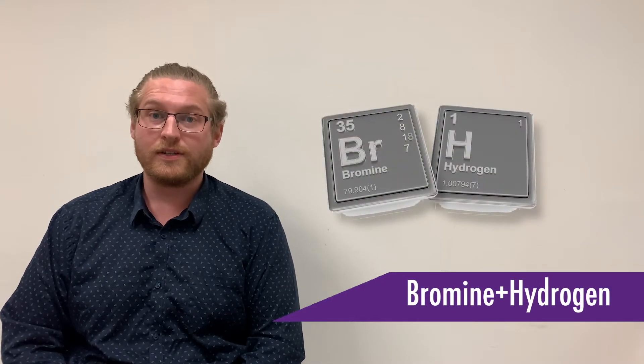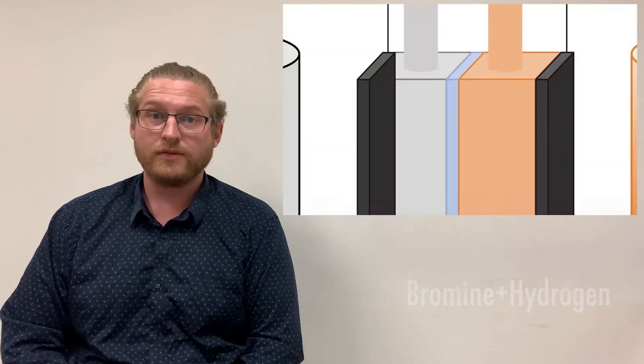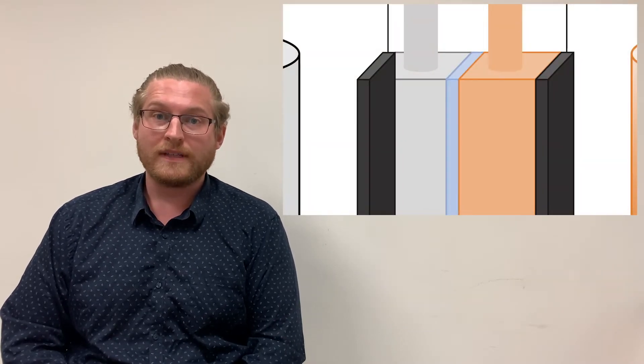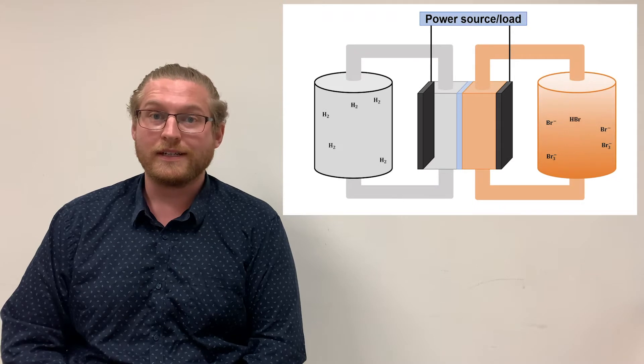The hydrogen bromine redox flow battery utilizes bromine and hydrogen as charge storage mediums. A central stack, similar to a fuel cell, contains the electrodes and membrane, whilst the hydrogen and bromine electrolytes are stored in external tanks.